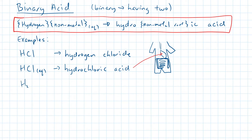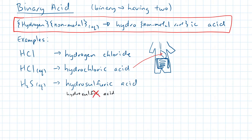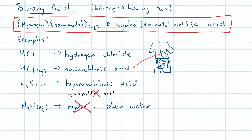This third formula also starts with hydrogen and ends with AQ, so it too is an acid. Can you name this third one? Hydrosulfuric acid. One more example — H2O is just plain water, so this formula is nothing more than just plain water dissolved in water. Sneaky!